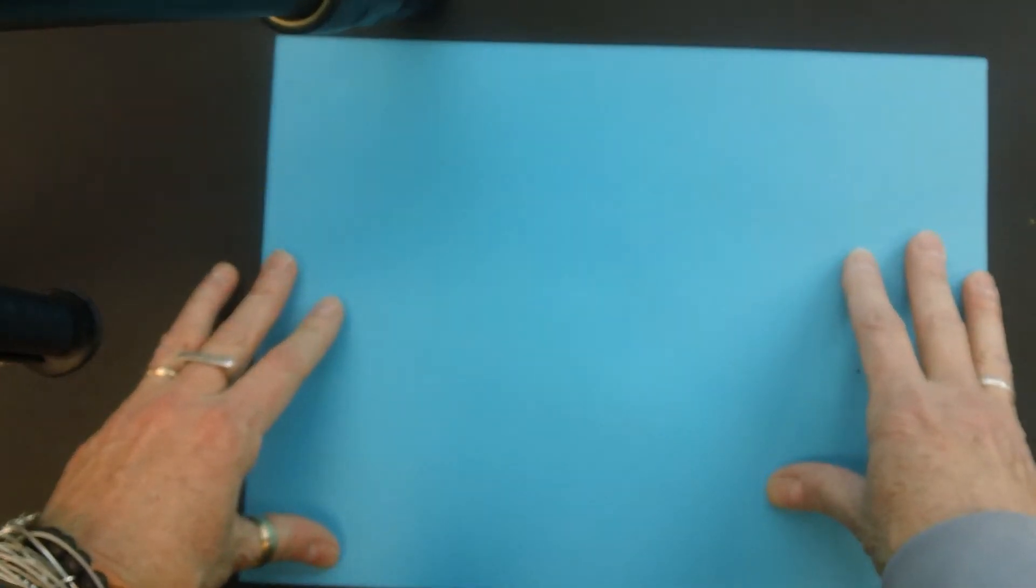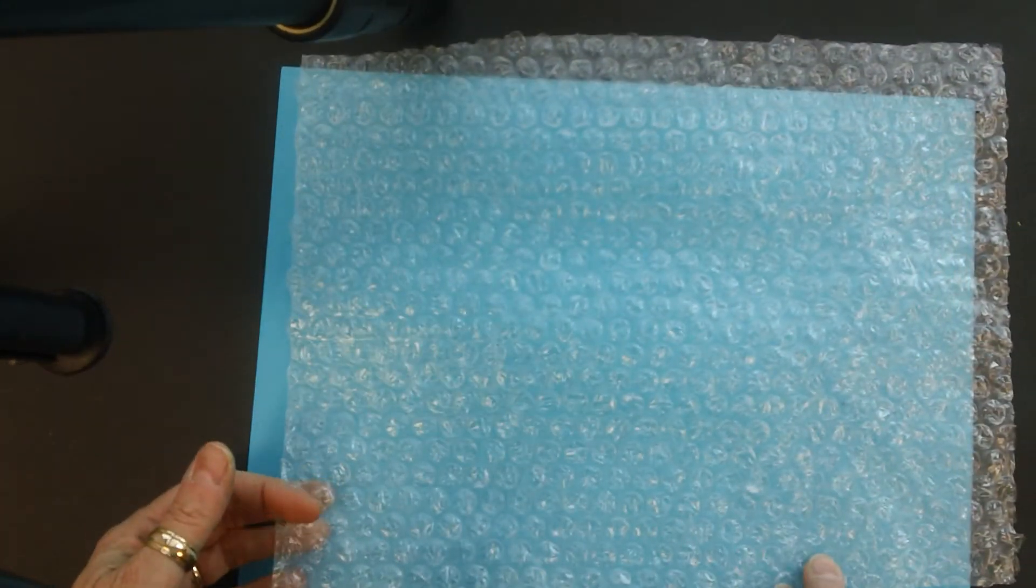Everyone's going to get a piece of blue paper and the next thing we're going to do is we're going to print something on the background and we are going to print with bubble wrap.